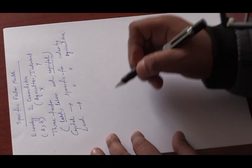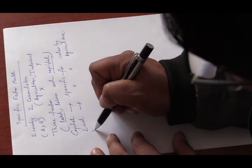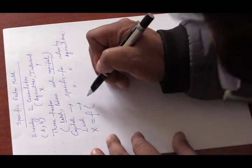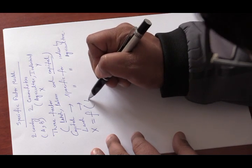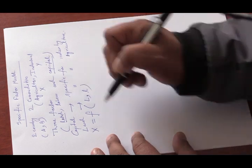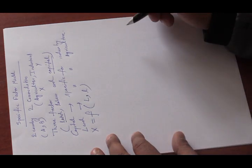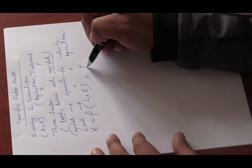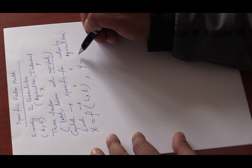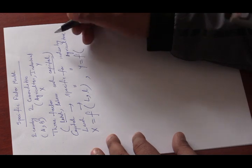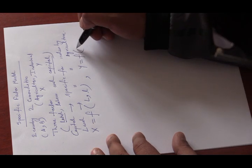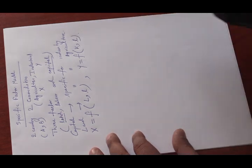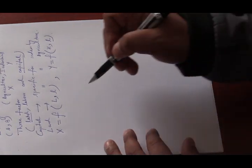The agricultural production function X is a function of land (T) and labor (L). Similarly, the industrial production function Y is a function of capital (K) and labor (N). Labor is perfectly mobile between sector X and sector Y.